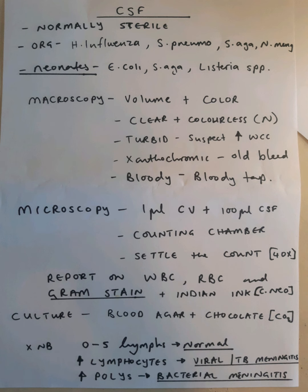But if someone has meningitis and the patient is an adult, we suspect organisms like Haemophilus influenzae, Streptococcus pneumoniae, Streptococcus agalactiae, and Neisseria meningitidis. It is slightly different with neonates, because neonates get neonatal meningitis, which is mainly caused by Escherichia coli, Streptococcus agalactiae, and Listeria species.